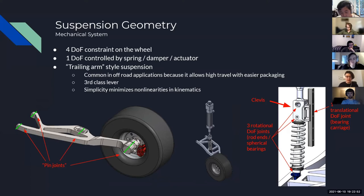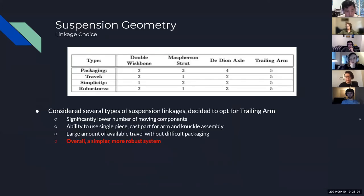This style of arm is described as a trailing arm and is commonly used in off-road suspension, as its packaging factor allows it to be much longer and get more travel relative to other types of suspension. We looked at several alternatives and did a design matrix, leading us to choose the trailing arm.